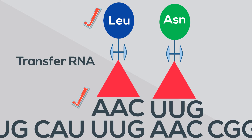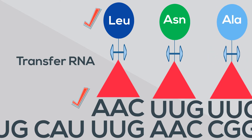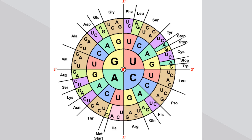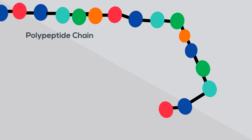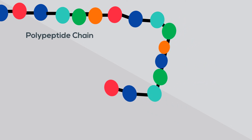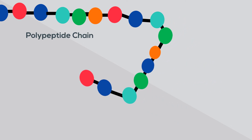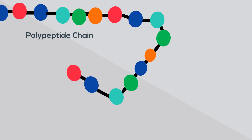Each amino acid attaches to a particular codon. You can use an amino acid chart to see which codon matches with each amino acid. After the stop codon is reached, the string of amino acids may begin to fold into a functional protein.